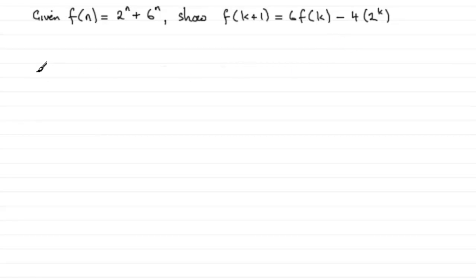So let's start then by saying 6f(k) minus 4 multiplied by 2 to the power of k. Let's see what this is going to equal. Well, it's going to be 6 multiplied by f(k). And we know f(n) is this, so all we need to do is replace the n in here with a k. So we're going to have 6 multiplied by 2 to the power of k plus 6 to the power of k, and that's going to then have minus 4 times 2 to the k on the end here.